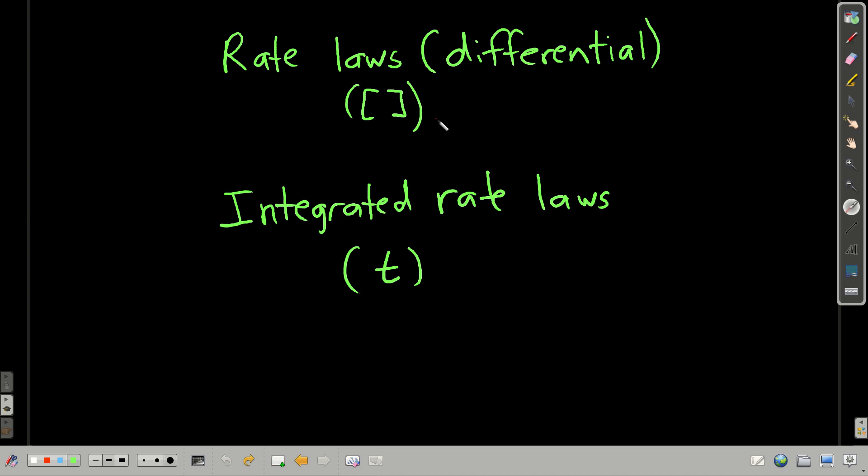All right. So, the rate laws that we've seen so far, we call them rate laws sometimes, they're called differential rate laws. And the rate for differential rate laws, the ones we've seen so far, the rate depends upon the concentration, it's a function of the concentration of the reactant or the reactants. Now, there are these things called integrated rate laws, which are related to the differential rate laws by integration. But these depend upon time, the rate changes over time. So, we're going to look at both of these throughout this chapter.